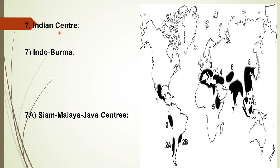Sugar, oil, and fiber plants from the Indian center include sugarcane, coconut palm, sesame, safflower, tree cotton (oriental cotton), jute, and Crotalaria. Spices and stimulants include kenaf, hemp, black pepper, gum arabic, sandalwood, indigo, cinnamon, croton, and bamboo.